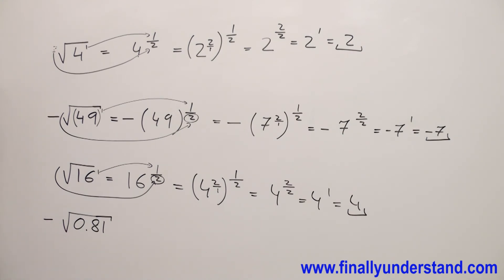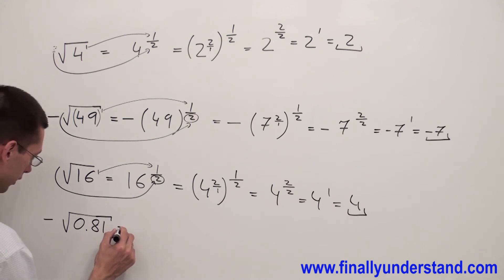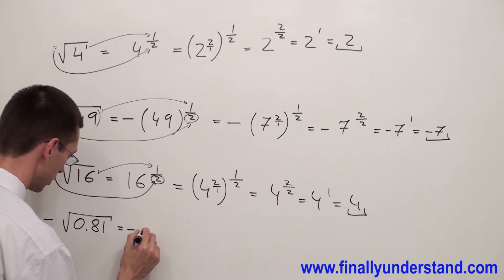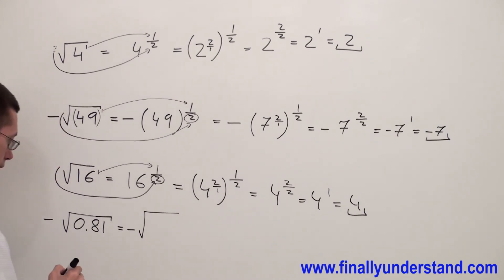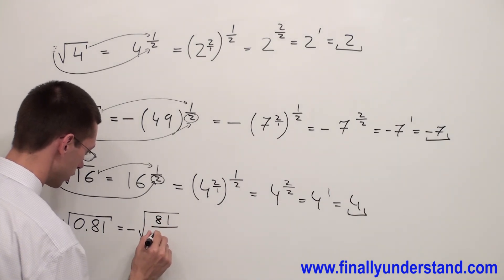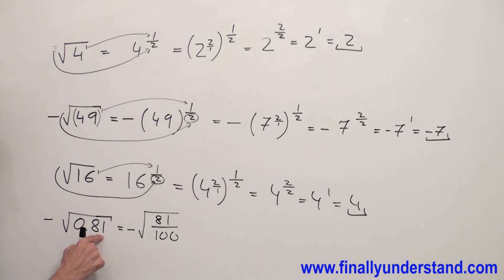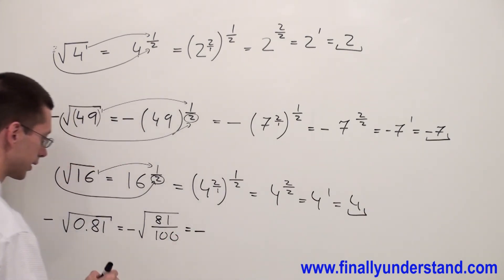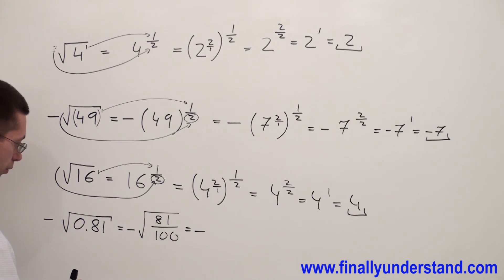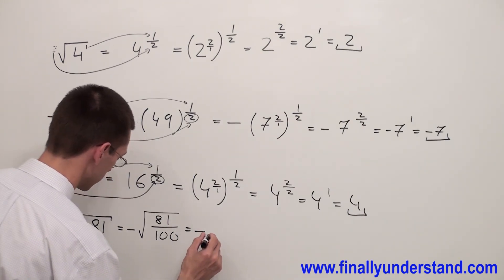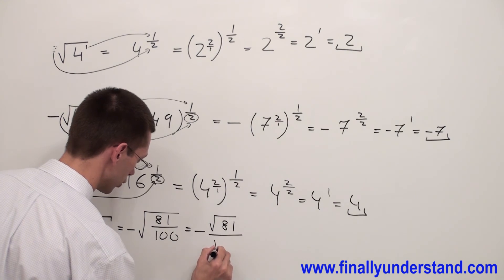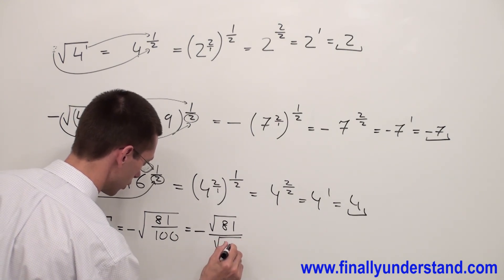Now let's take a look at this example. I have negative square root of 0.81. This is nothing else than negative square root of 81 over 100, because 0.81 is 81 hundredths. So what I'm going to do next is write the negative sign — because this sign is going to stay with my example, we don't cancel it — and I'm going to write square root of 81 over square root of 100.